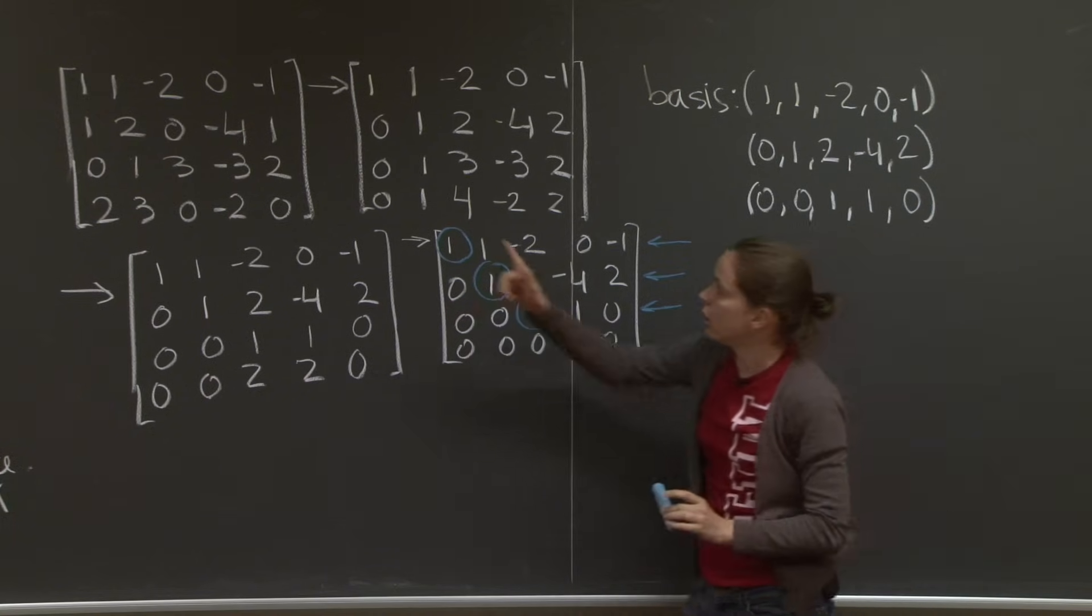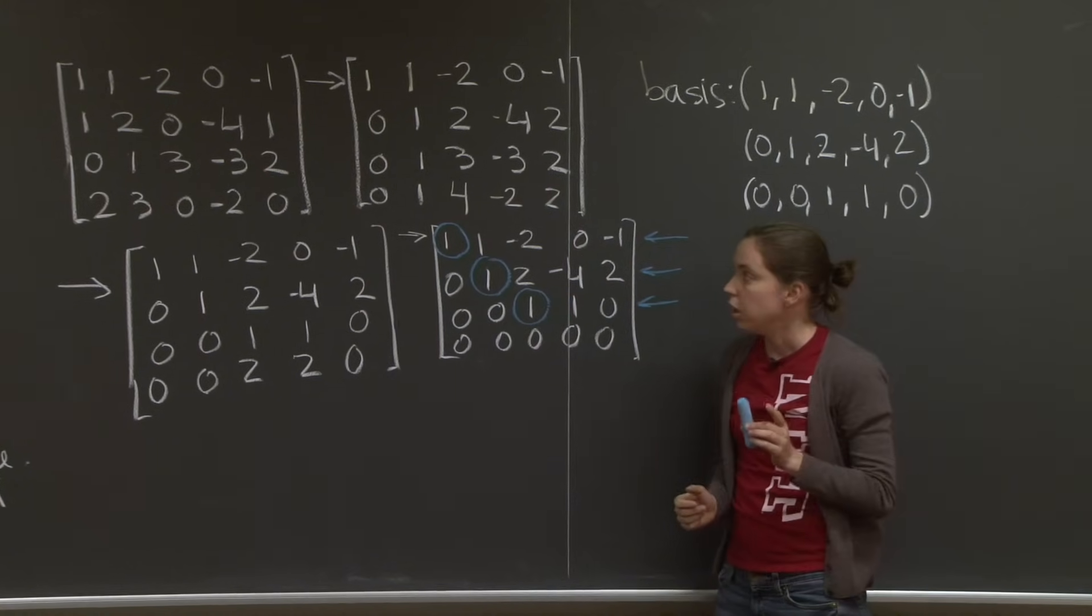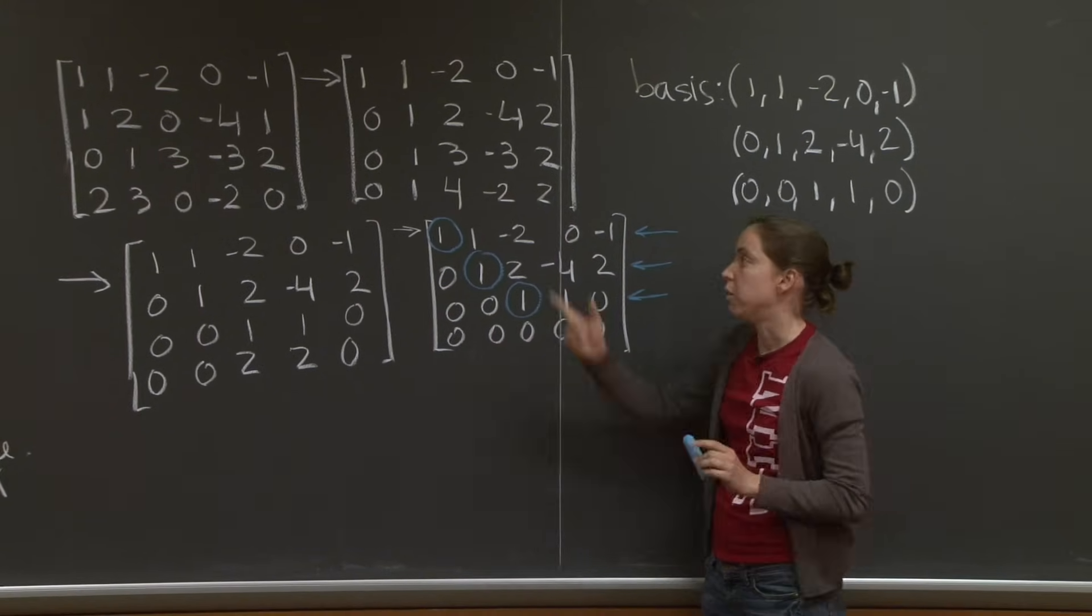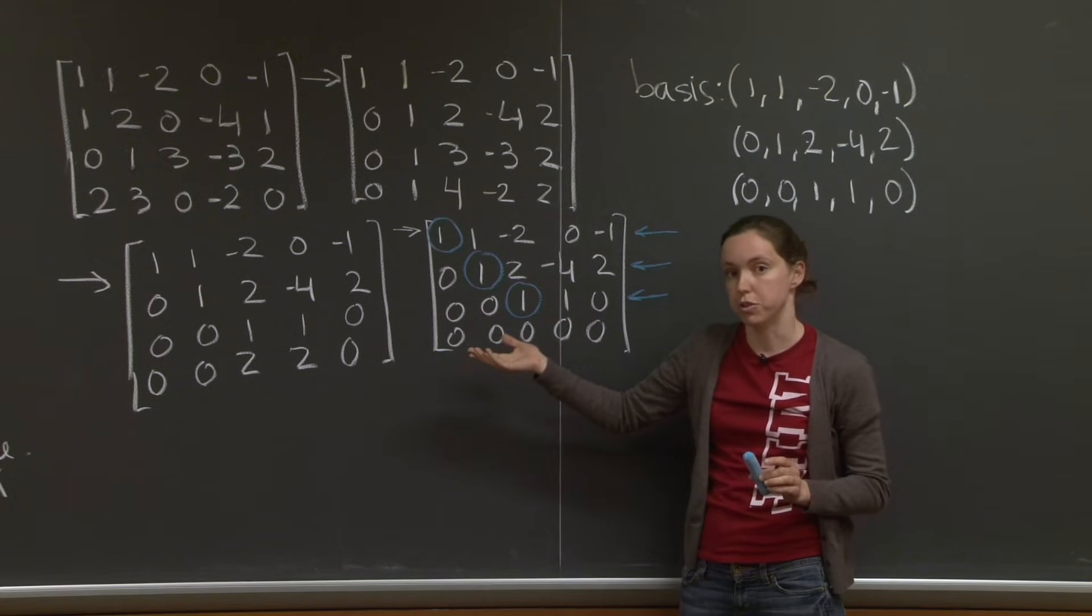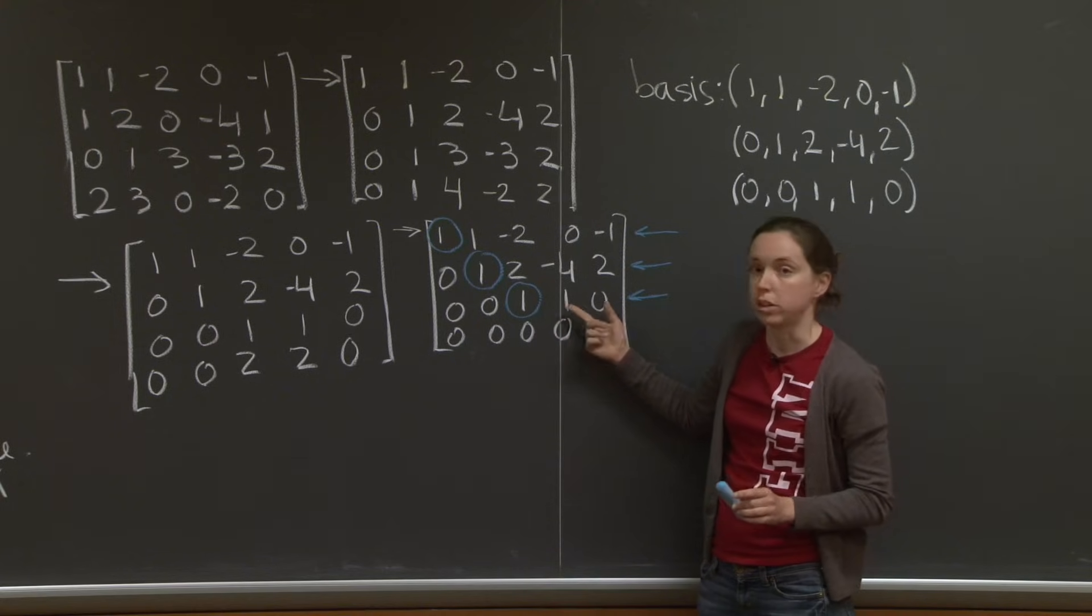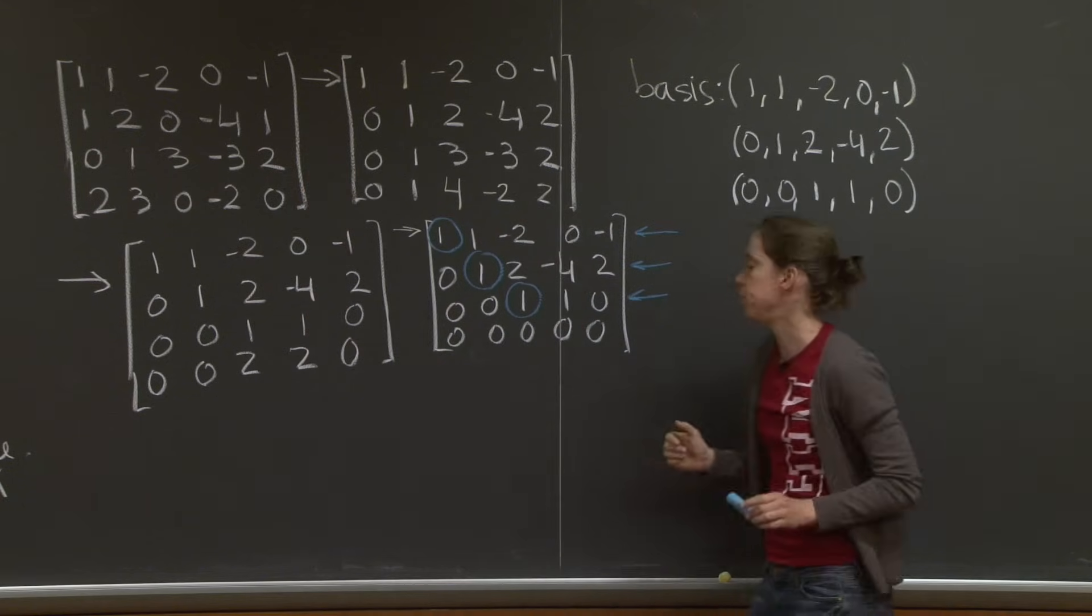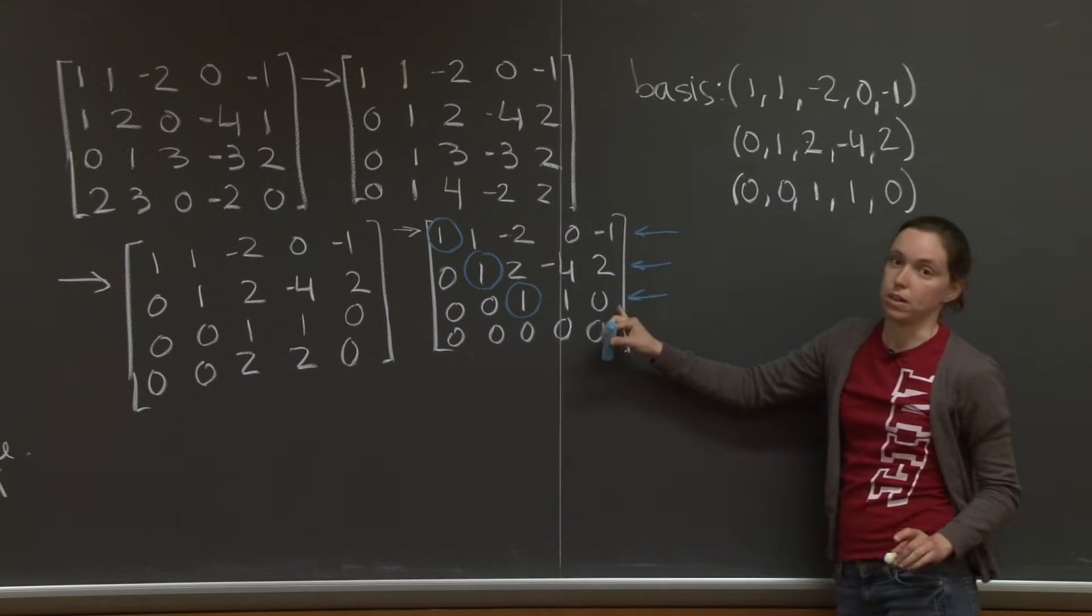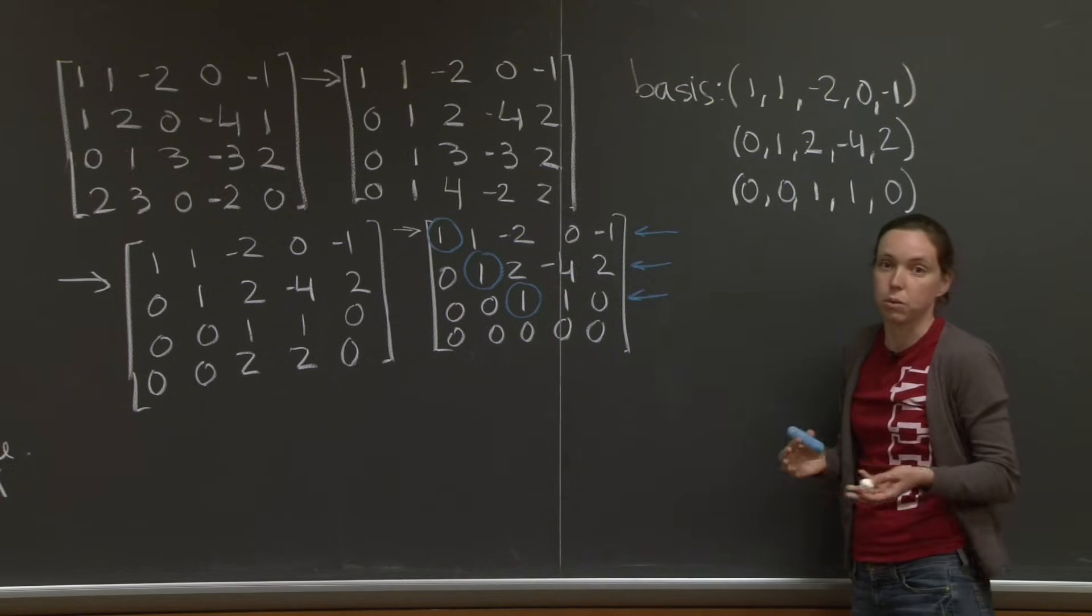Could you have used the first three rows? Yes, you could. You can't always do that. Sometimes in elimination, you have to switch rows because there's a 0 where a pivot should be. When that happens, you have to use these three, or you have to keep track of which row you switched to go back and use the initial ones. But it's really safe to use these ones. And also, they're simpler than the ones that you started with. So why not?